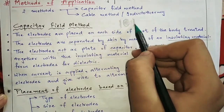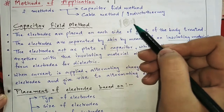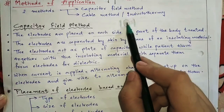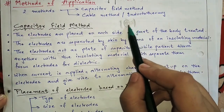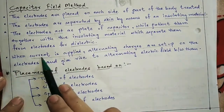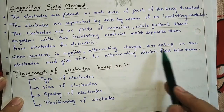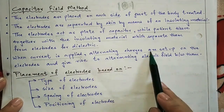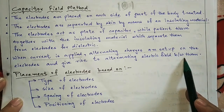When the current is applied, alternating charges are set up. AC current will be used — not DC current. So alternating current is used and gives rise to alternating electric fields between the electrodes.